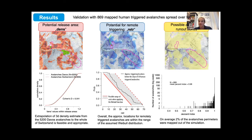The avalanche parameters of those avalanches largely overlap the RAMMs simulation. The graph below shows that the overlap is nearly 100% for most avalanches, and only about 2% of the perimeters did not overlap the simulation.